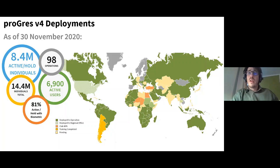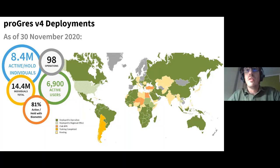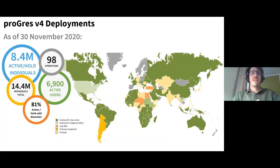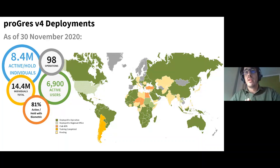Progress takes in beneficiary data but also manages the identity management aspect throughout what we call the refugee life cycle — from a person becoming a refugee until they are no longer considered one. There are many aspects in this life cycle that go beyond simple data capture and management. Progress attempts to cover all these different aspects in one place in order to provide better protection and services to refugees. The biggest leap in Version 4 is that we went completely online with a centralized system, globally deployed to 98 operations.